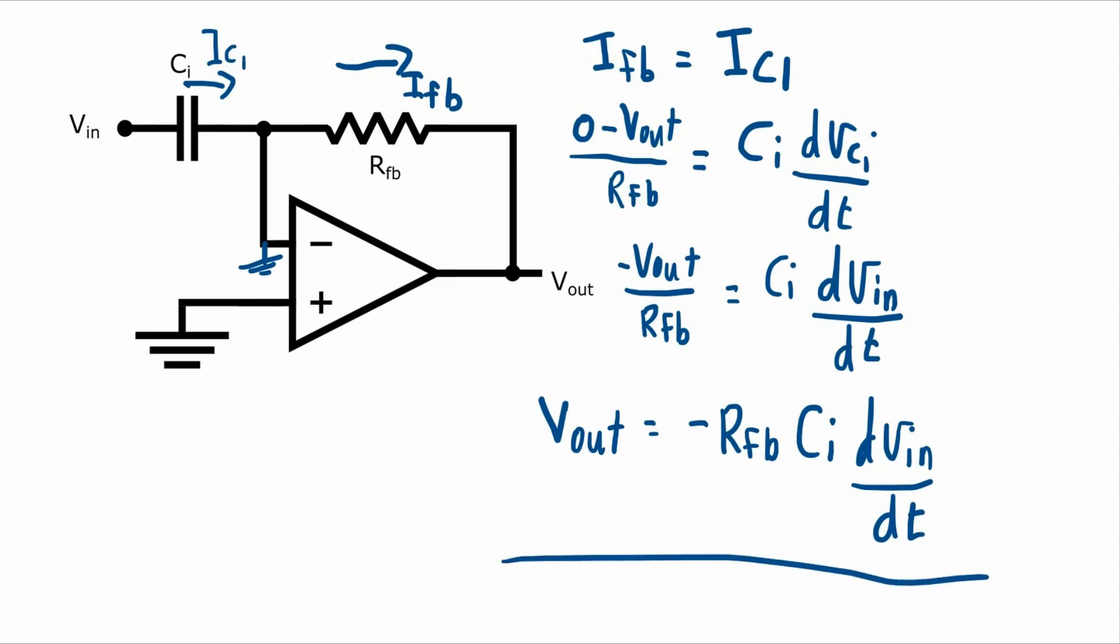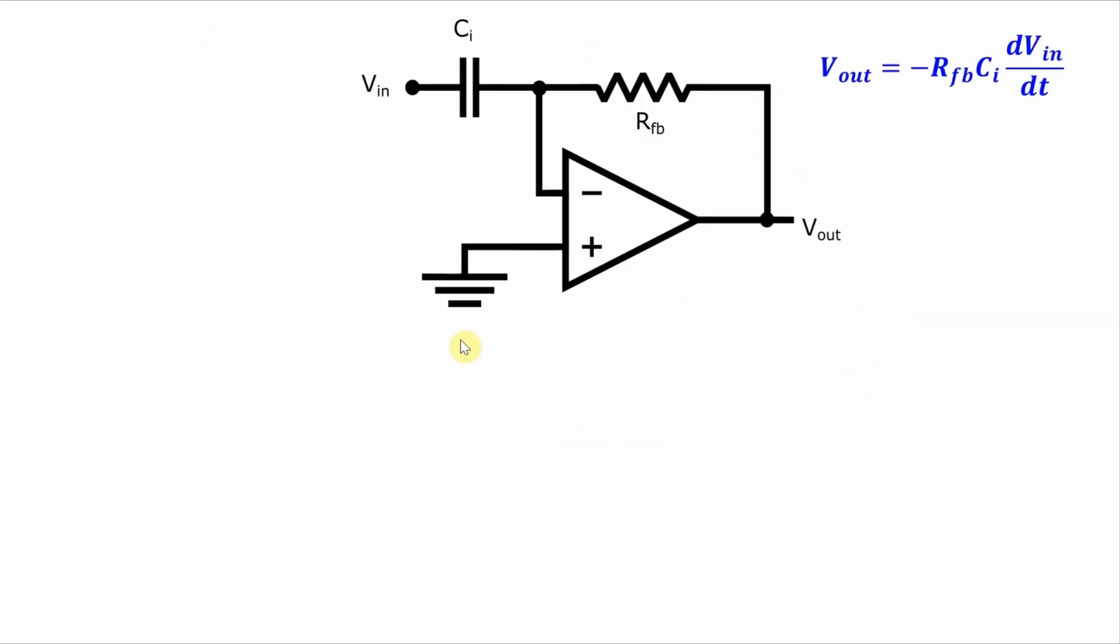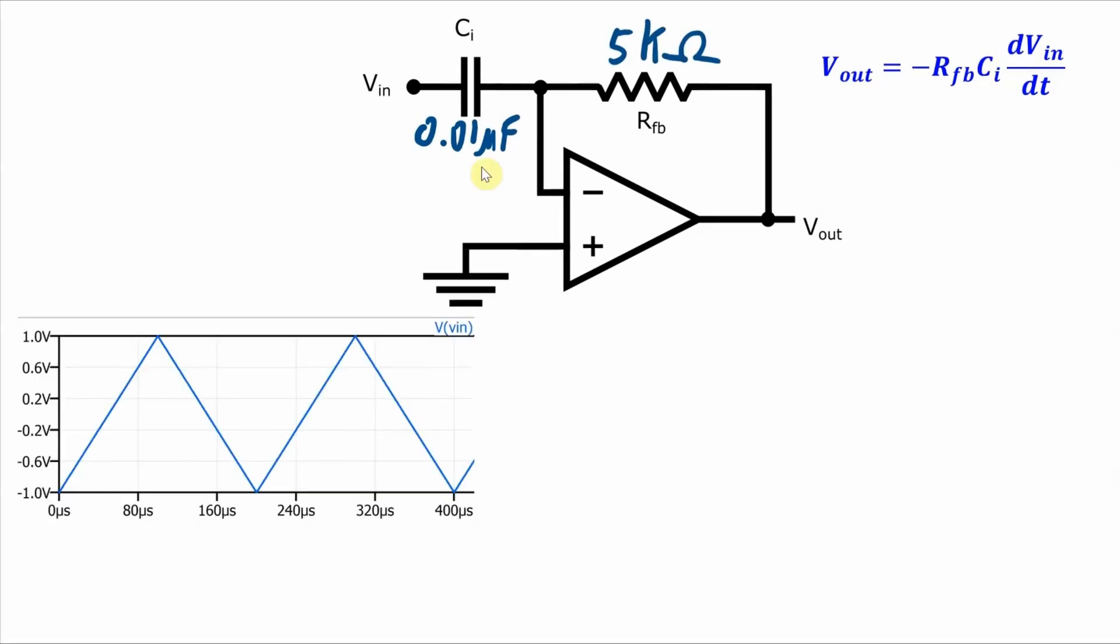Now let's do an example and then simulate it to check the results. So here's our differentiator circuit with the equation relating output and input. Let's say that the capacitor is a 0.01 microfarad capacitor and the resistor is a 5 kiloohm resistor.